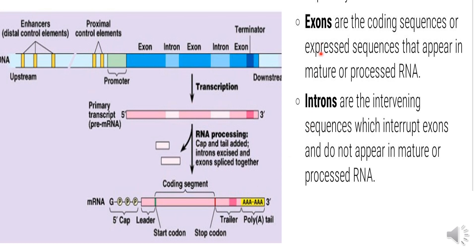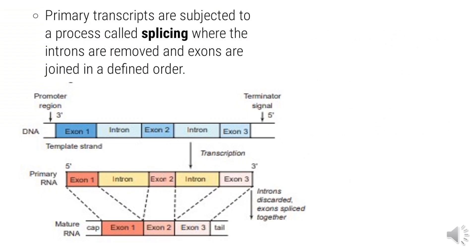What are exons and introns? Exons are the coding sequences present in both DNA and mRNA — they code for protein production. Introns are the intervening sequences which interrupt exons. They are non-coding sequences. The process of removing introns is called splicing, which results in only coding sequences remaining in the mature RNA, with exons joined together.